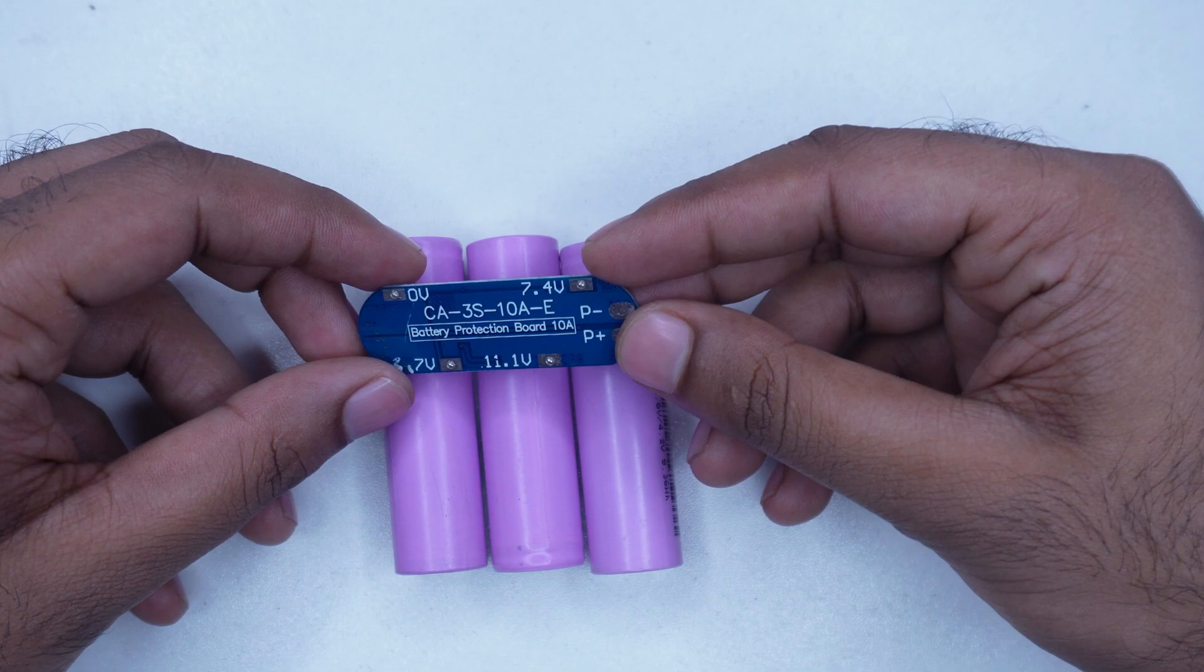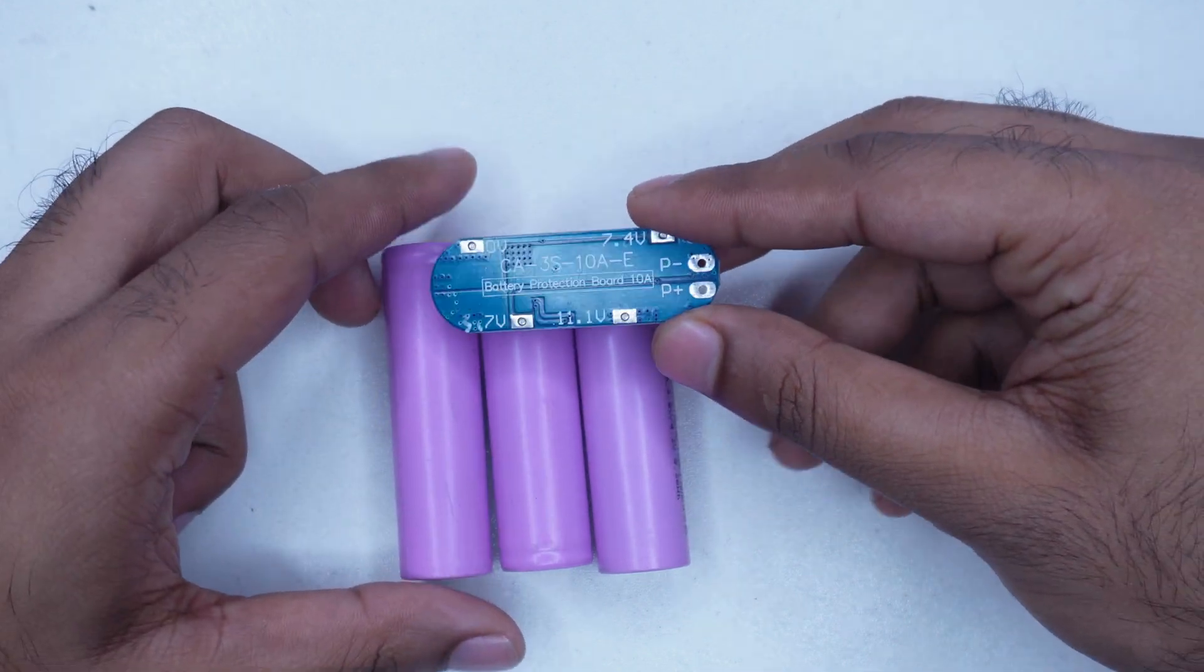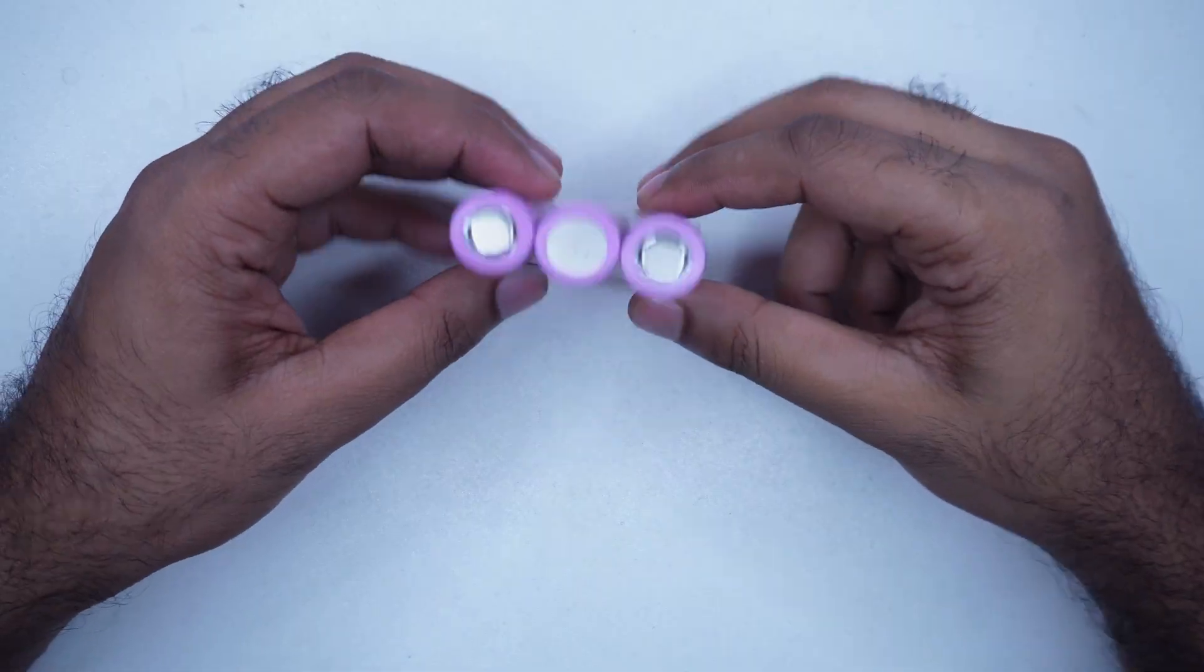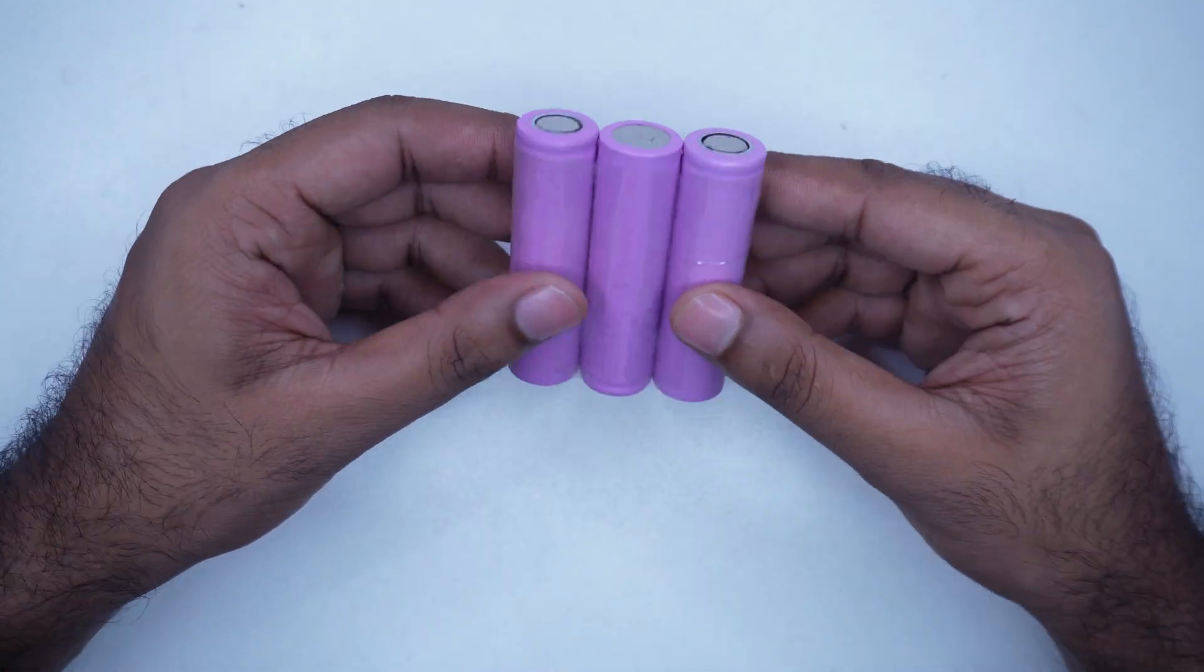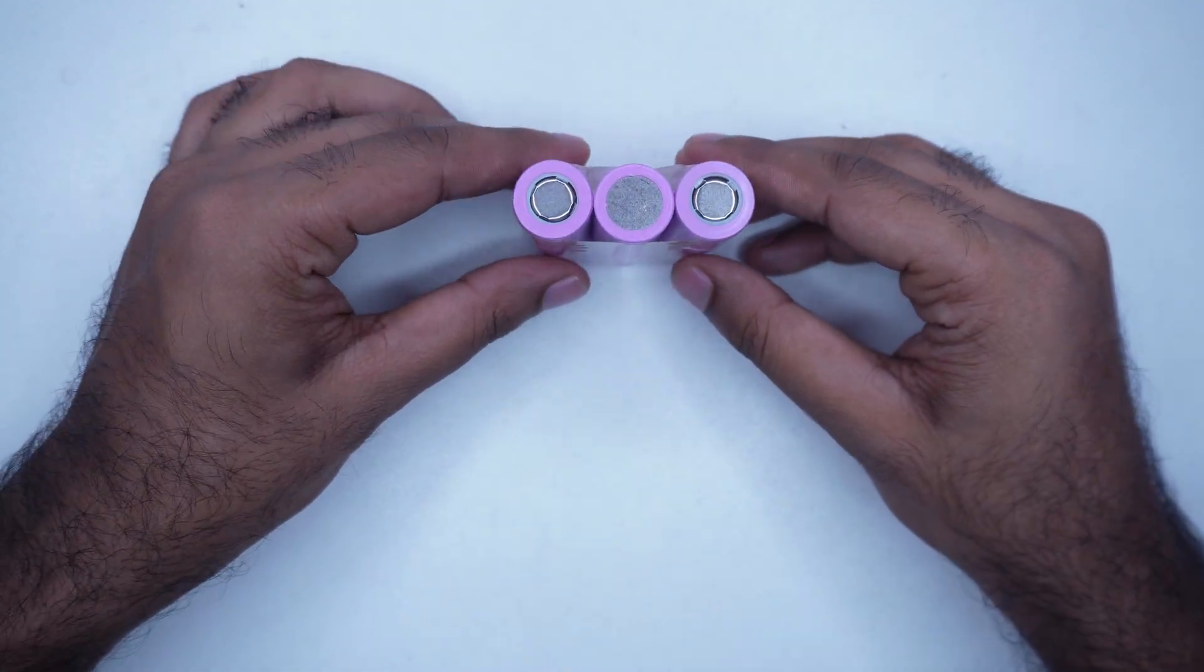We will connect these batteries to the BMS circuit as per the diagram we just saw. I taped the three batteries together so the batteries will not move and will be completely fixed.